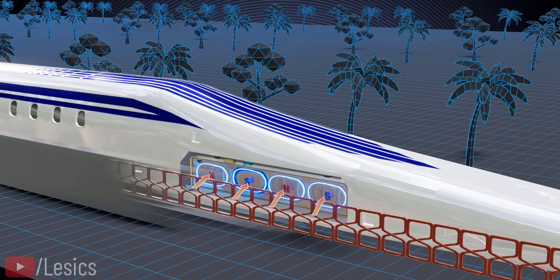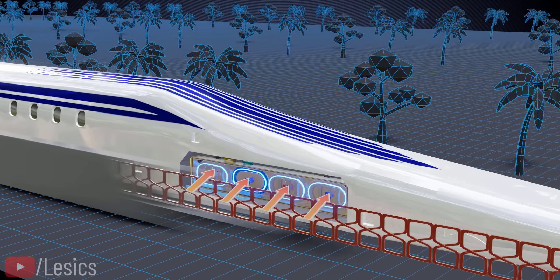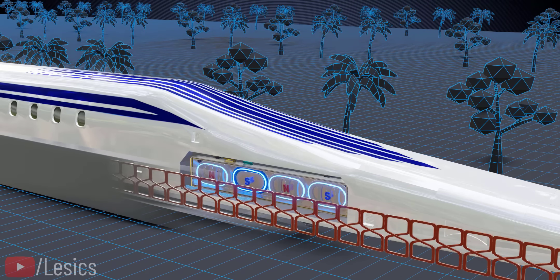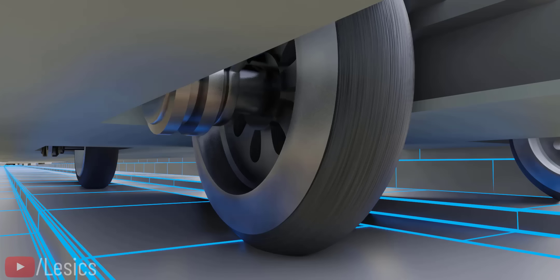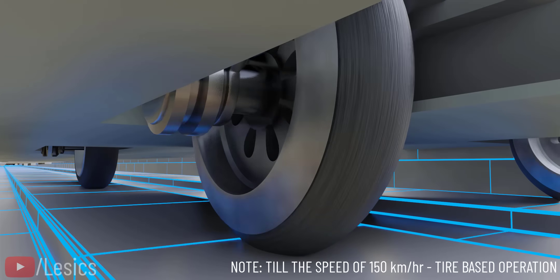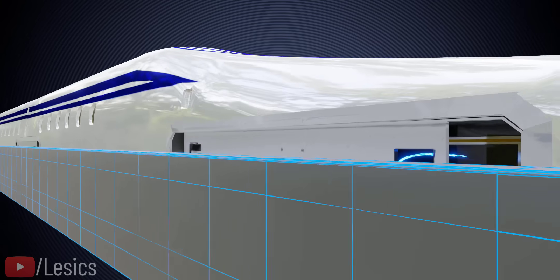Clearly, the higher the train's speed, the greater the levitation force, which means that when the train is at rest, it cannot levitate. This is why the SC Maglev train uses normal tires for starting and low-speed operation. When the train achieves a critical speed, the tires retract as the electromagnetic force is strong enough to levitate the train.